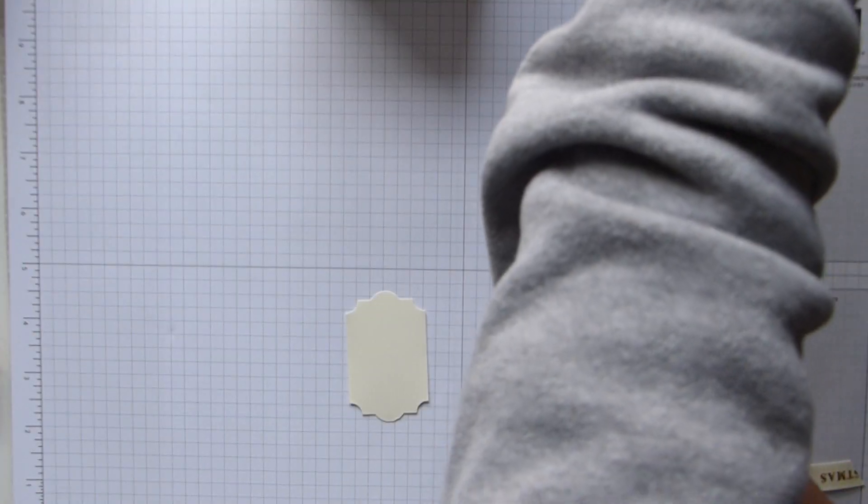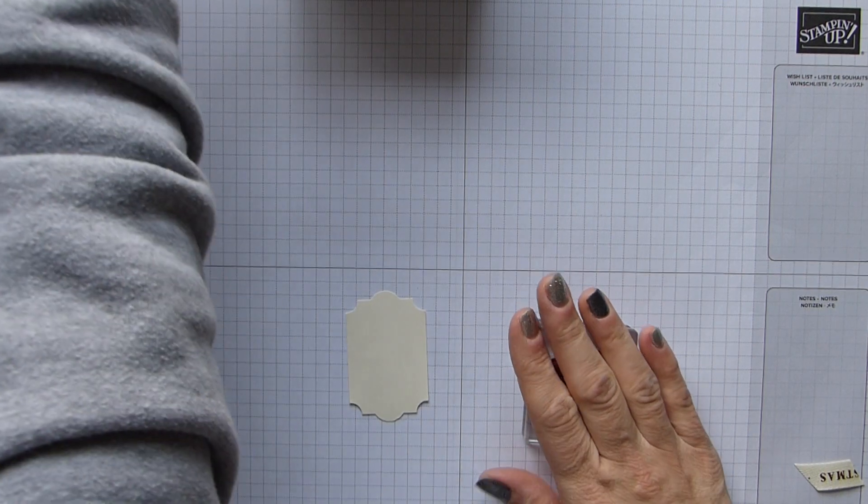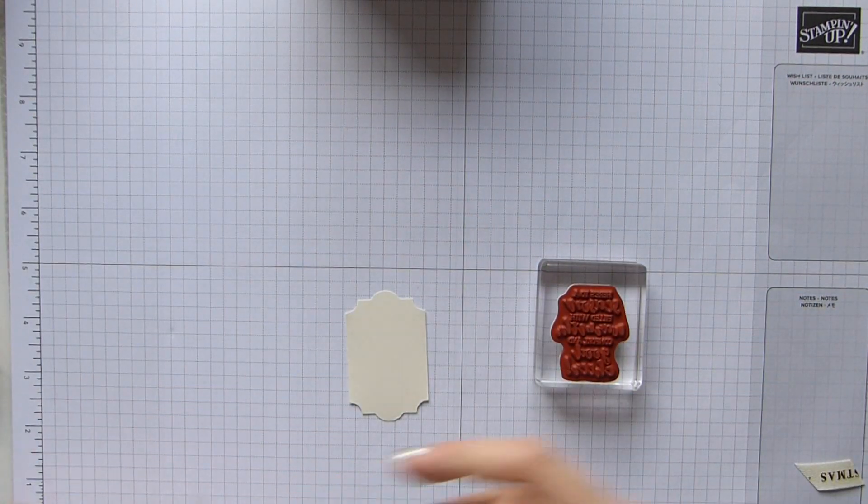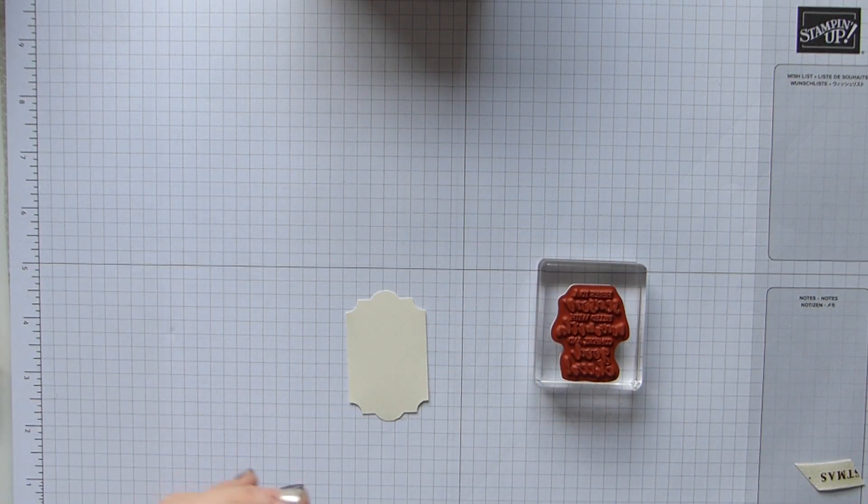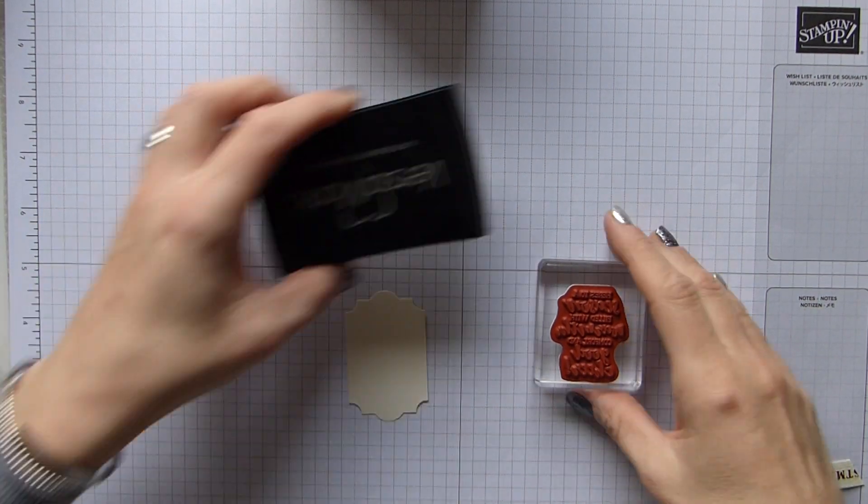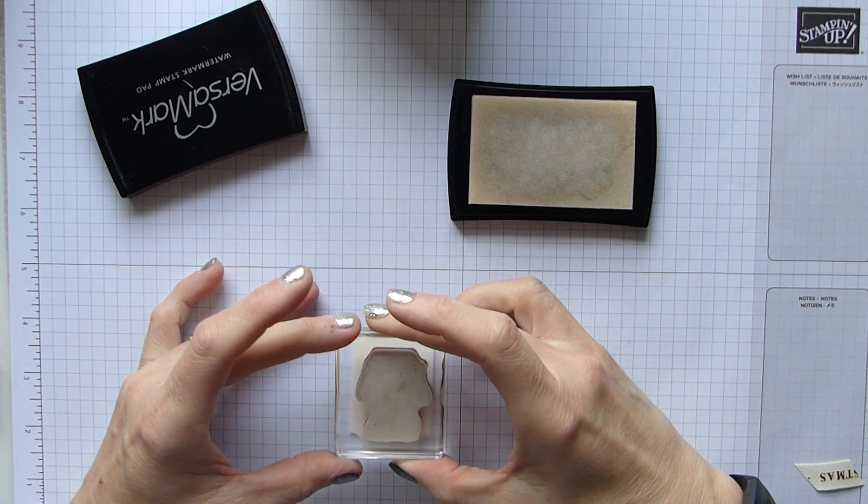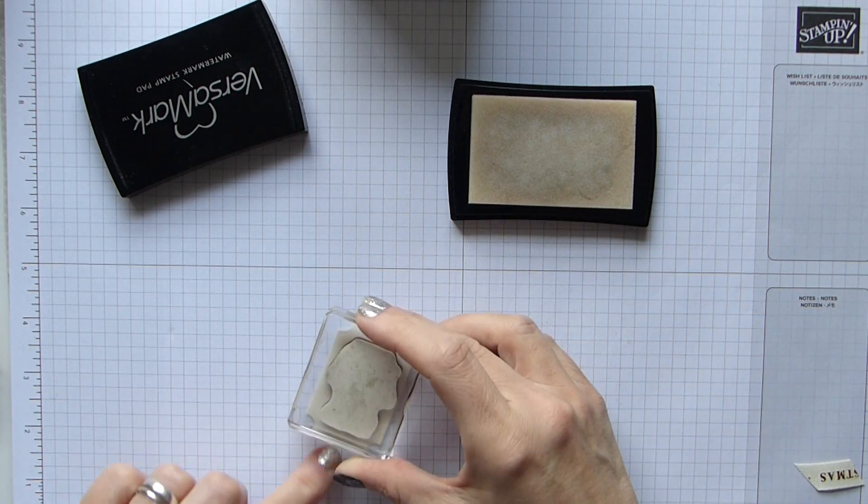And then I just want to use my tool here just to open up those loops slightly. And then that bow isn't sitting anywhere near as nicely as the last one. And then the last piece of the puzzle is my everyday label punch that I've used. In fact, I've got a smaller piece of vanilla here.